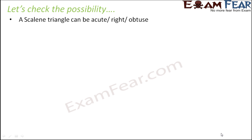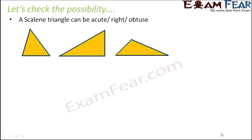Let's check the possibility of combinations between equilateral, scalene, isosceles and right angled, obtuse angled, and acute angled triangles. A scalene triangle, where all three sides are unequal, can be an acute angled triangle where all angles are less than 90 degrees — that is a scalene acute. It can also be a scalene right triangle where one angle is 90 degrees, or a scalene obtuse where one angle is more than 90 degrees. So a scalene triangle can be acute, right angled, or obtuse angled.